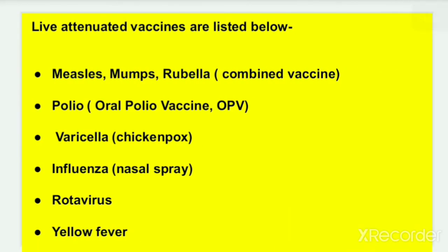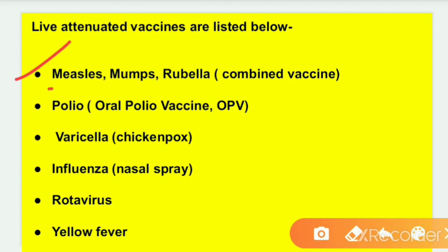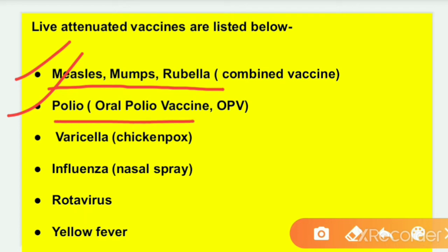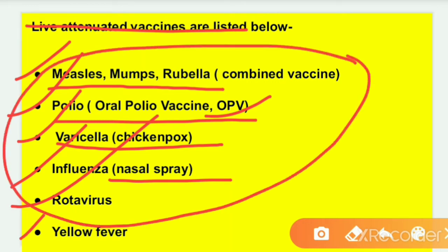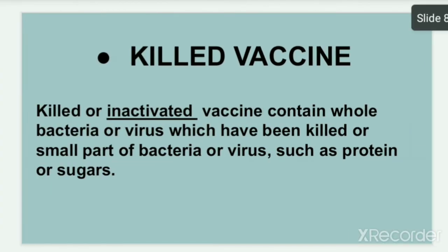Examples of live attenuated vaccines include: Measles, Mumps, Rubella — the MMR combined vaccine; Polio OPV (oral polio vaccine); Varicella (chickenpox) vaccine; Influenza nasal spray; Rotavirus; and Yellow Fever vaccine.